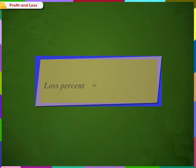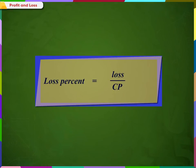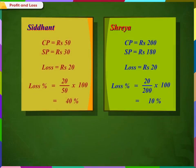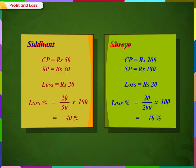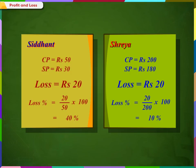To calculate loss percent, we divide the loss by the cost price, multiplied by 100. As we saw in the case of profit percent, in a similar manner, even if the loss made by two people is the same, the loss percent can be bigger based on the cost price.